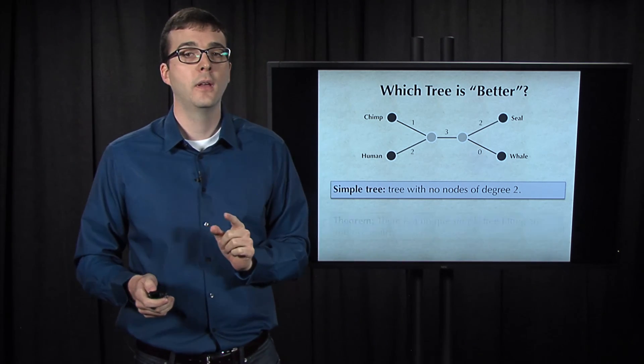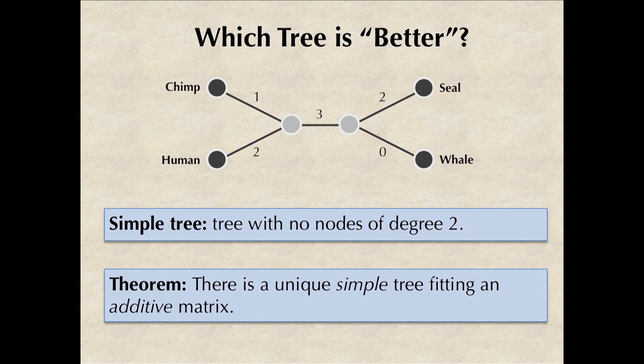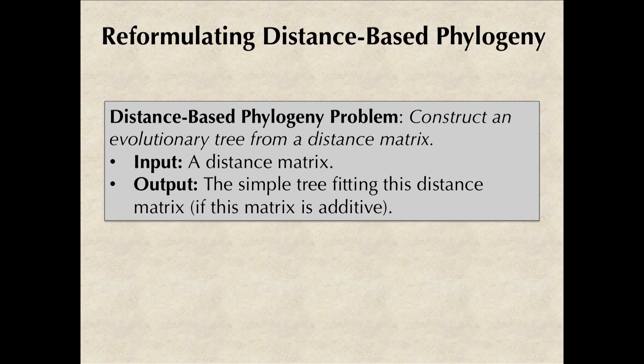And the good news is that if a matrix is additive, i.e. there is a tree fitting this distance matrix, then there exists exactly one simple tree that fits it. Now that we are armed with some better terminology, we can return to the distance-based phylogeny problem that we had before and restate it as finding the simple tree that fits a given distance matrix as long as that matrix is additive.